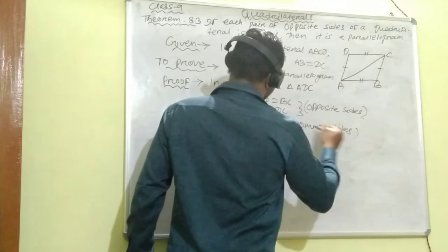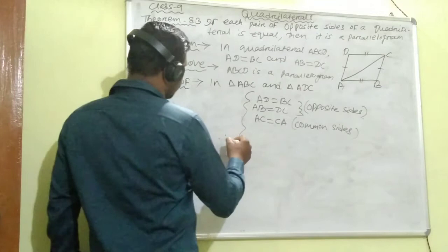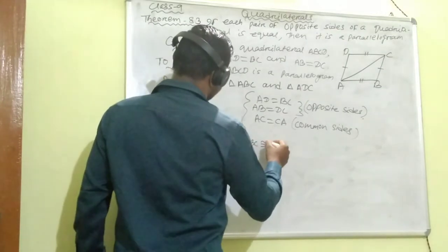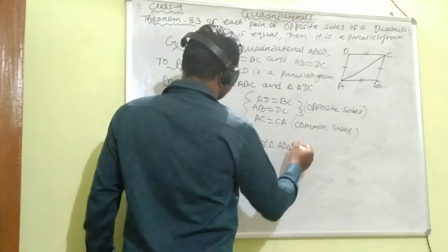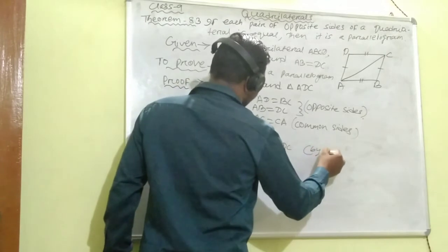Therefore, triangle ABC is congruent to triangle CDA by SSS criteria. As the triangles are congruent, we can say the rest of the parts are also equal by CPCT.